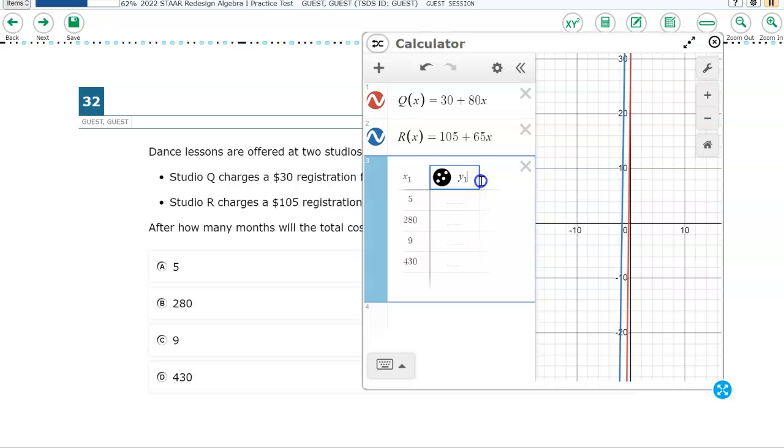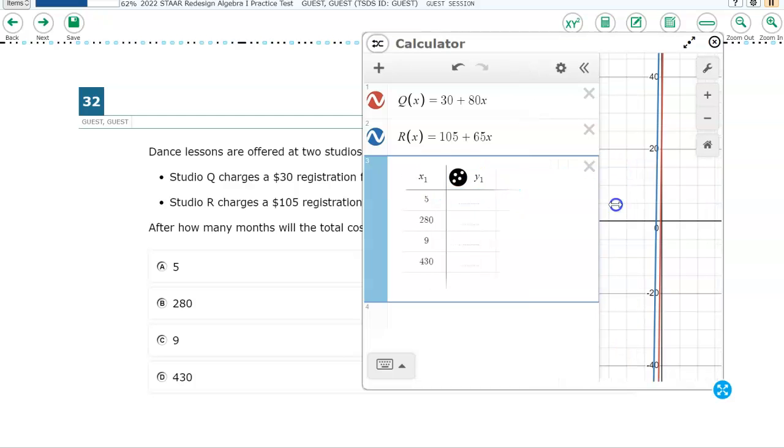So for Y1, I'm going to take out this Y1 and replace that with capital Q, open parentheses, X1. And what it did is it took those values in X1 and put all of those numbers, one at a time, into Q of X. And these are the numbers that it output. Now go to the right of that, and it will create another column in your table. We're going to do the same thing for the function R. So I put a capital R, open parentheses, X1. You have to type a one. It will subscript it for you. And it will use the numbers in the X1 column to fill this out.